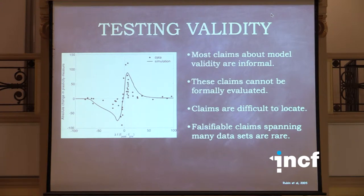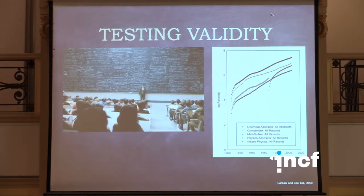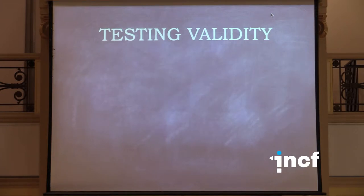It's also difficult to find what the claims in a model are across papers and literature. Claims that give models broad scope — claiming validity across a wide range of data — are rare, because usually the data a modeler has access to is something they or their collaborator collected. This is becoming a real problem because there are lots and lots of data to account for, and the rate of growth of papers has been growing exponentially for 100 years. You can't track down all this data by hand.